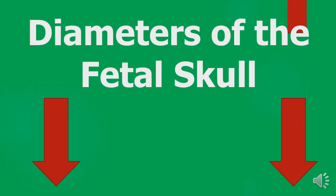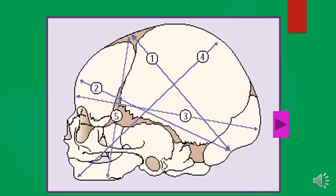Welcome to another exciting lecture. Today I'm going to focus on the diameters of the fetal skull. My name is Kamwendo Urodi. When we talk of the diameters of the fetal skull, we are talking of about six diameters: the suboccipital bregmatic, suboccipital frontal, occipital frontal, mental vertical, submental bregmatic, and submental vertical.